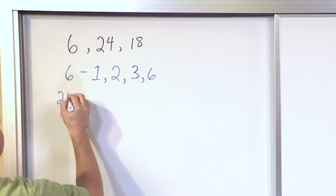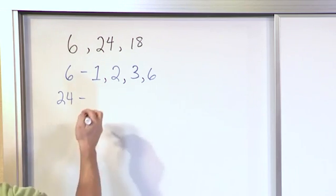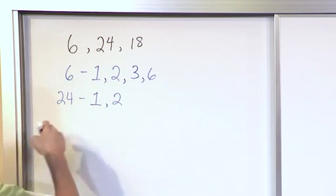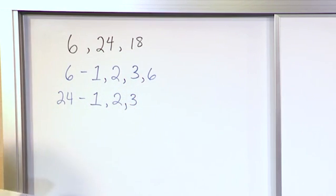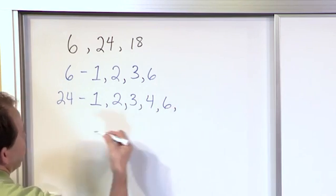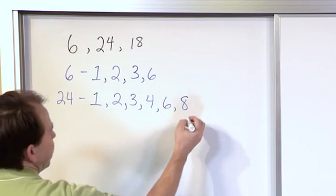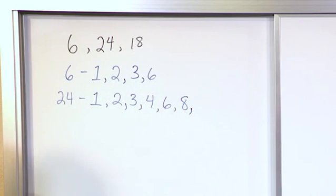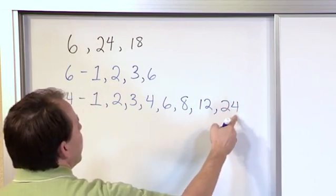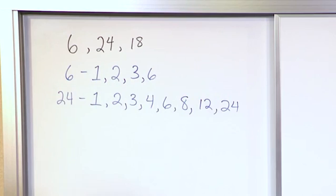Then we look at our middle number, 24, and list all the factors. It can get a little tricky, so we need to do it step by step. 1 is a factor. 2 is a factor because 2 times 12 is 24. 3 is a factor because 3 times 8 is 24. 4 is a factor because 4 times 6 is 24. 5 is not a factor, but 6 is a factor because 6 times 4 is 24. 7 is not a factor, but 8 is a factor because 8 times 3 is 24. 9, 10, and 11 are not factors. 12 is a factor because 12 times 2 is 24. Continuing up, 13, 14, 15 cannot divide in, so they're not factors. The last one on the list is always the number itself: 1, 2, 3, 4, 6, 8, 12, and 24.